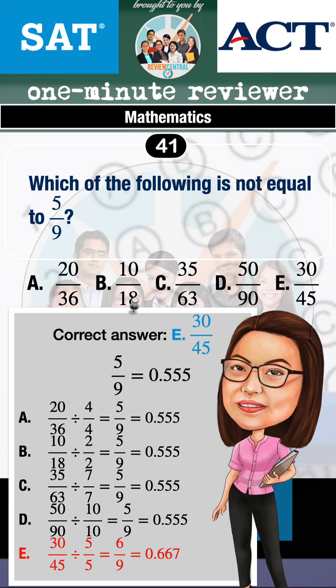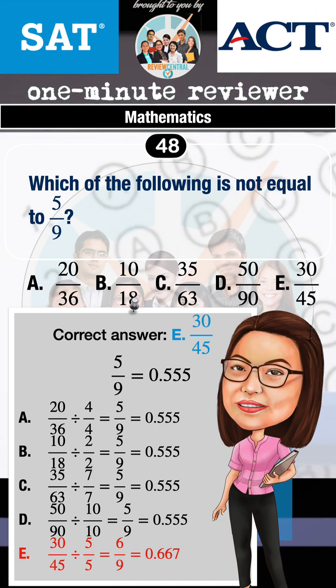For A, the common factor is 4. Dividing both numerator and denominator by 4 will simplify 20/36 to 5/9. For B, the common factor is 2. For C, the common factor is 7. For D, the common factor is 10.